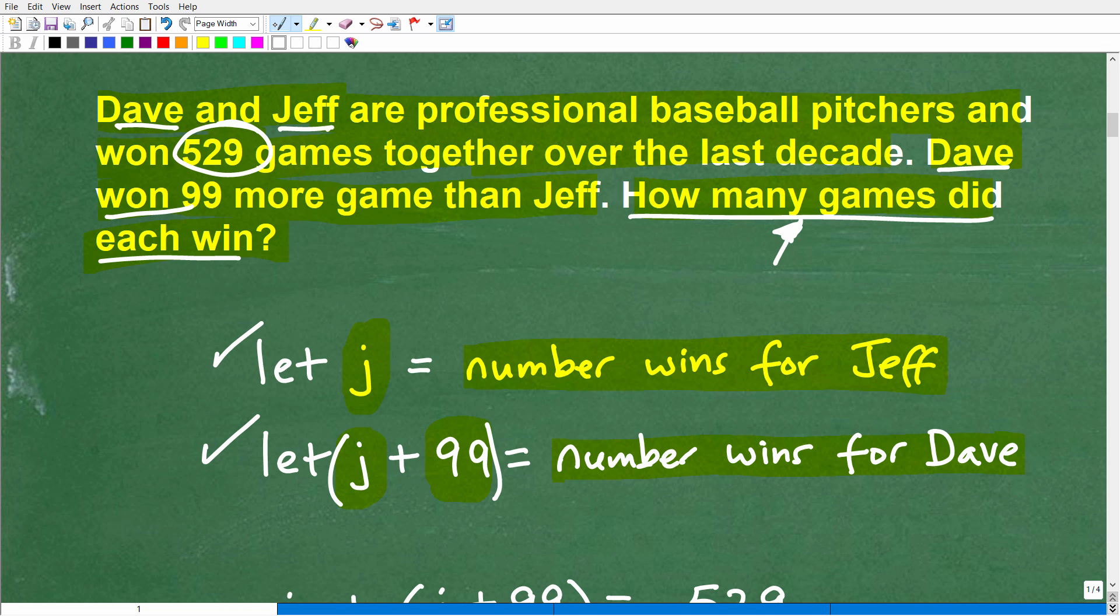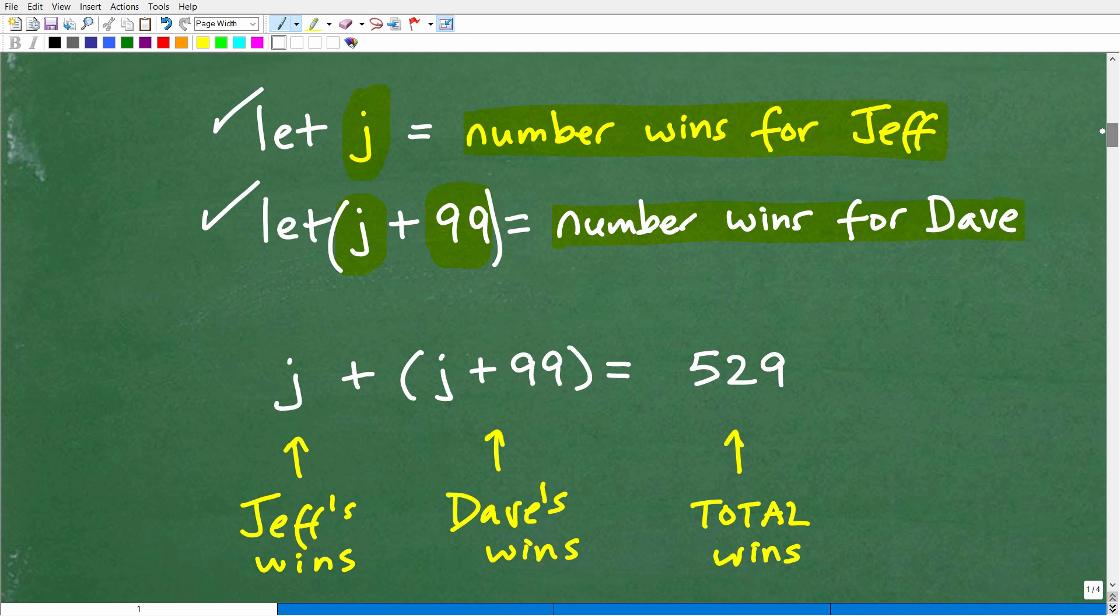Now, in algebra, sometimes you can have multiple different variables. But here, because I'm comparing, relating Dave and Jeff's games, I know that Dave won 99 more games than Jeff. So if I have Jeff's wins, I just tack on 99 and I have Dave's wins. So you don't have to use two separate variables here. So now the next thing we want to do is to set up an equation. We're going to use the information from the problem to equate some things. And I got to involve the variables and I got to create an equation. So I know that Jeff and Dave's total wins over the last decade were 529. So whatever number of games Jeff won, that was J, plus the number of games that Dave won, which is 99 more than Jeff's, so that's J plus 99, these two together I know are a total of 529. So this is our equation.